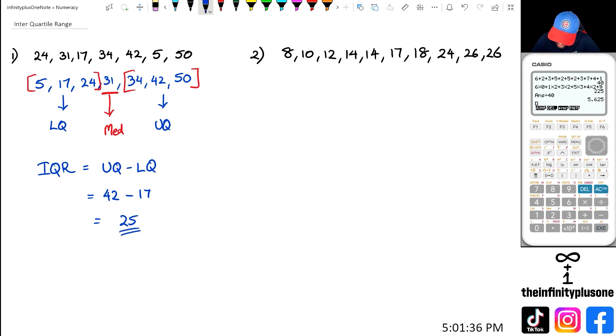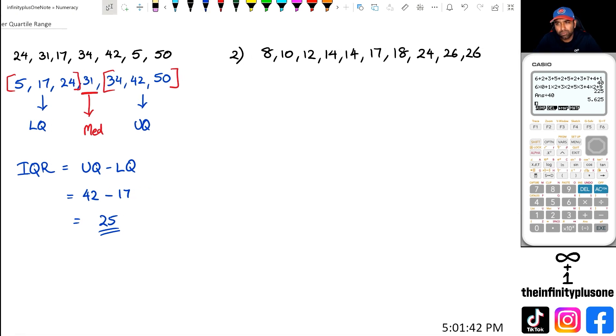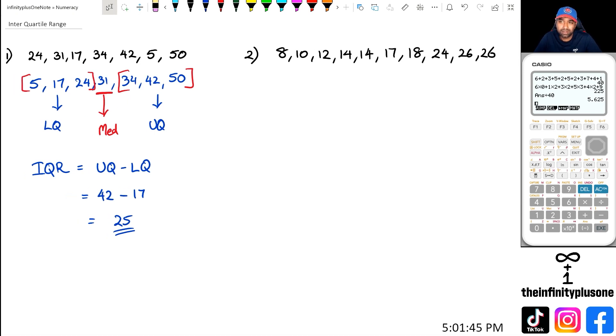Now looking at question number two, I have arranged this in ascending order. So our first step is, well, the thing is with interquartile range, you don't really need to find the median, you just need to find the lower quartile and upper quartile, or at least know how to find it.